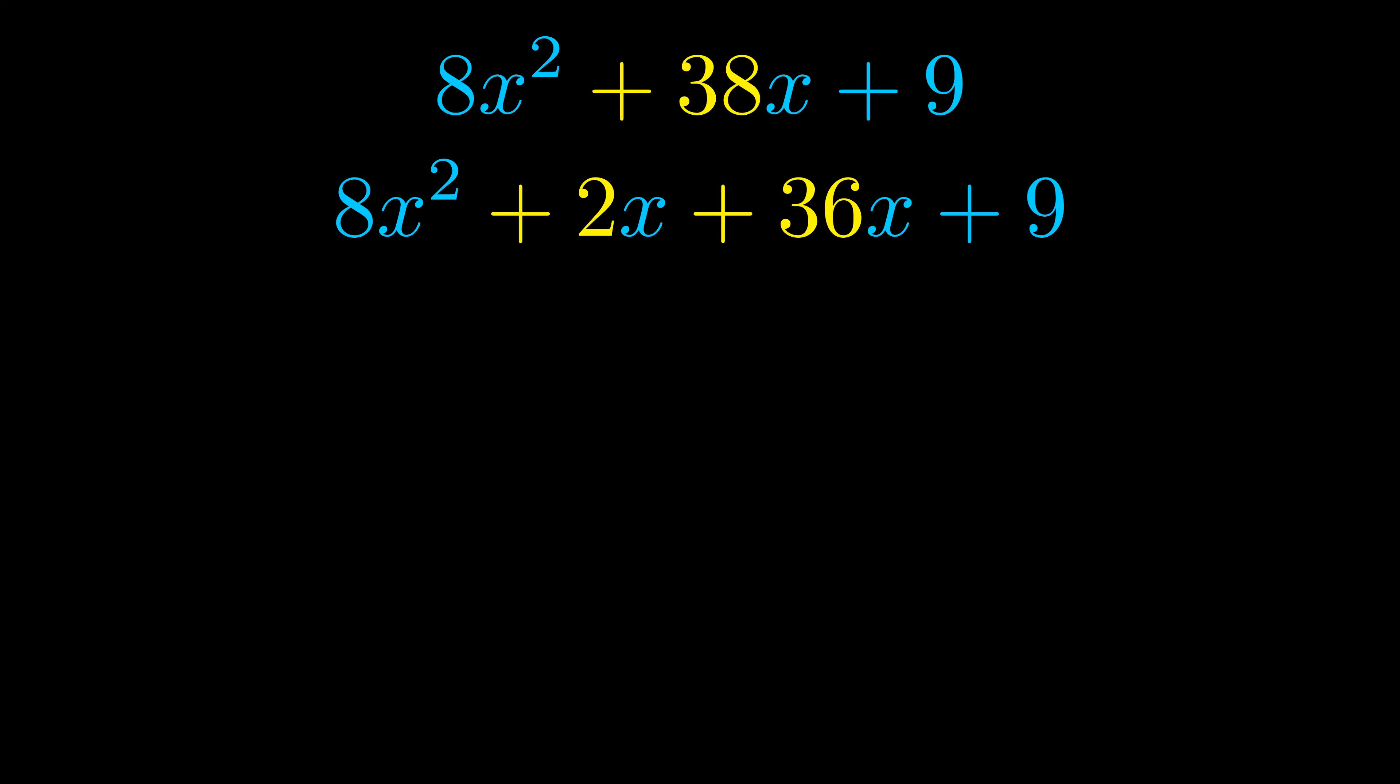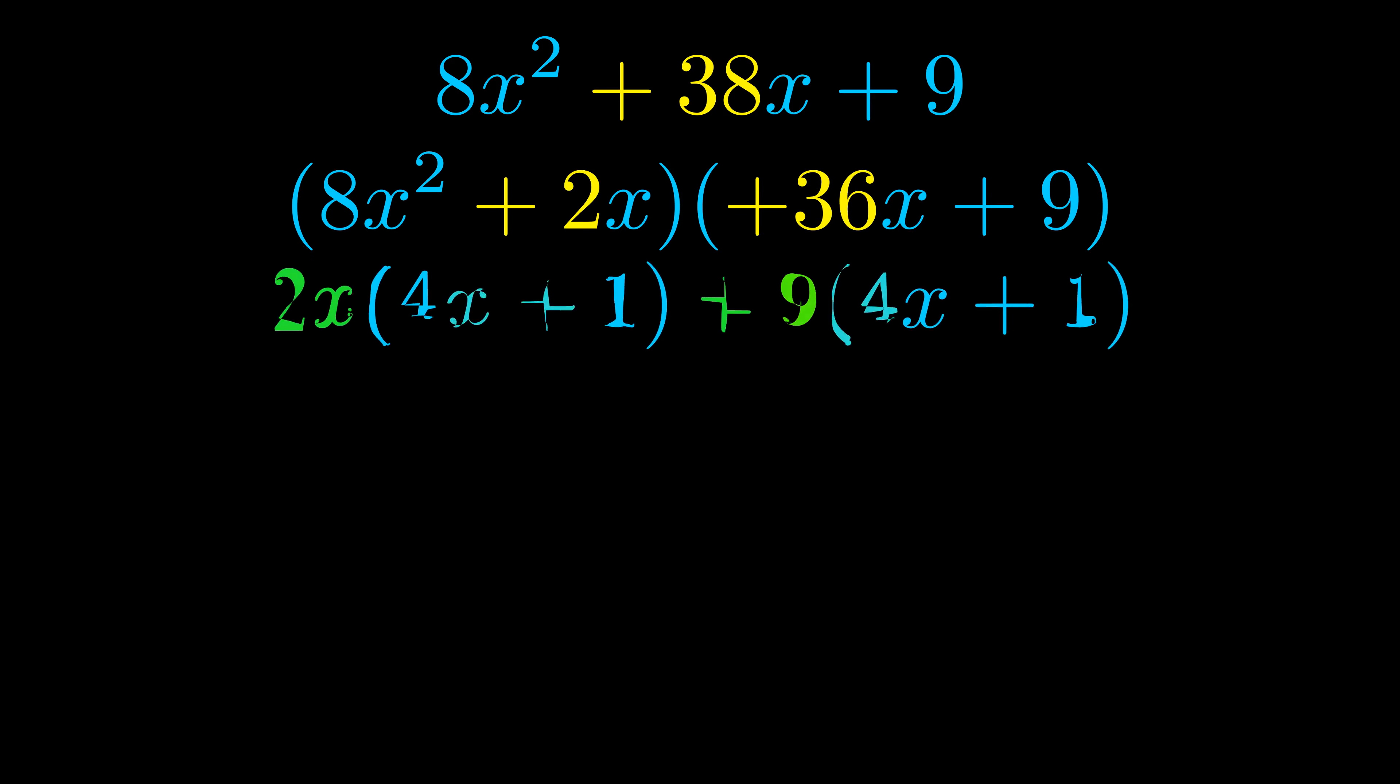Once we've done this we go ahead and we put parentheses around the first term and the last term and we do that so that we can take the greatest common factor out of both terms. We can see the greatest common factor is now outside in green.